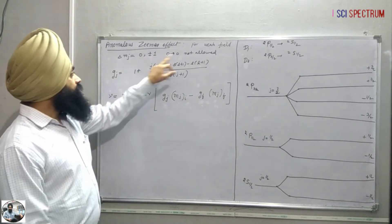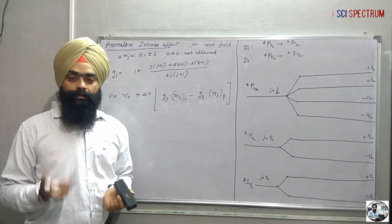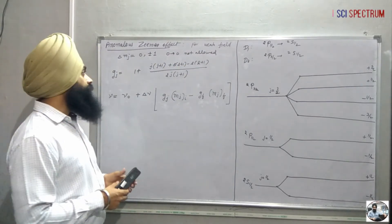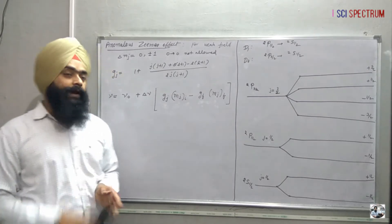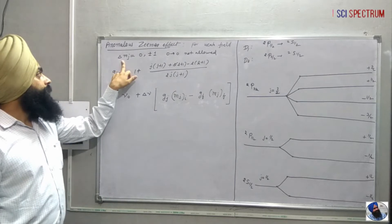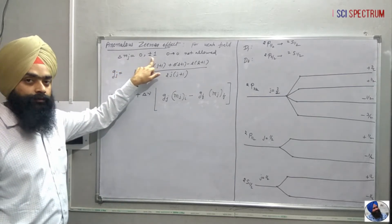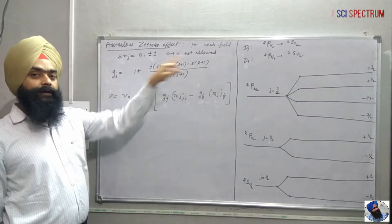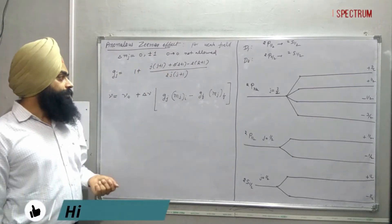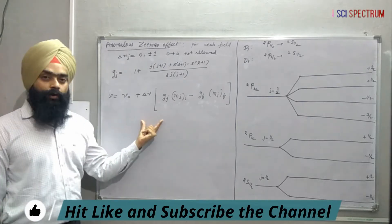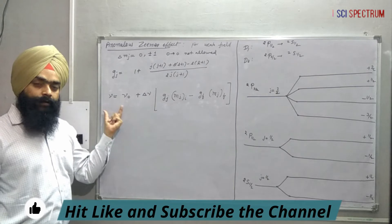The first difference is that for a weak field, rather than splitting into three lines, the spectral line splits into more than three lines — that is called the anomalous Zeeman effect. The selection rule is delta mj equals zero or plus/minus one. In the normal Zeeman effect it was delta ms equals zero or plus/minus one.